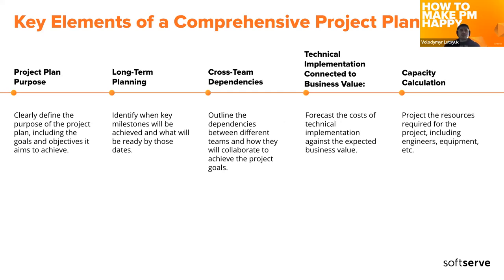A project plan needs to have a clearly defined goal or objective for the project you are going to achieve. You also need to identify milestones — what will be achieved and what will be ready by which dates. You also need to outline dependencies between teams: if there is more than one team, dependencies must be defined, and you need to decide how teams will cooperate to achieve a particular goal.